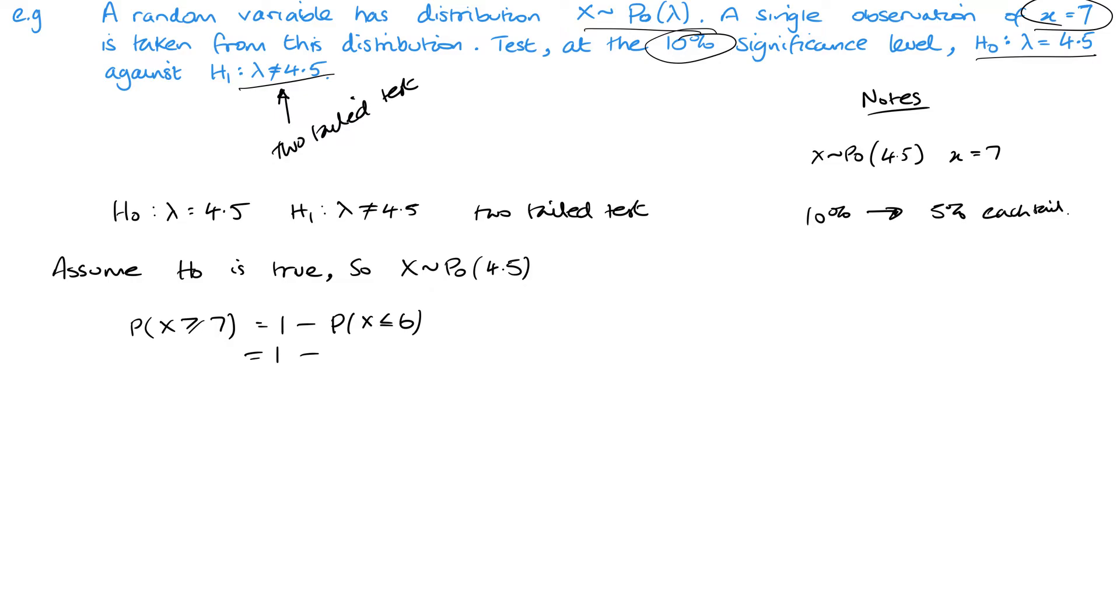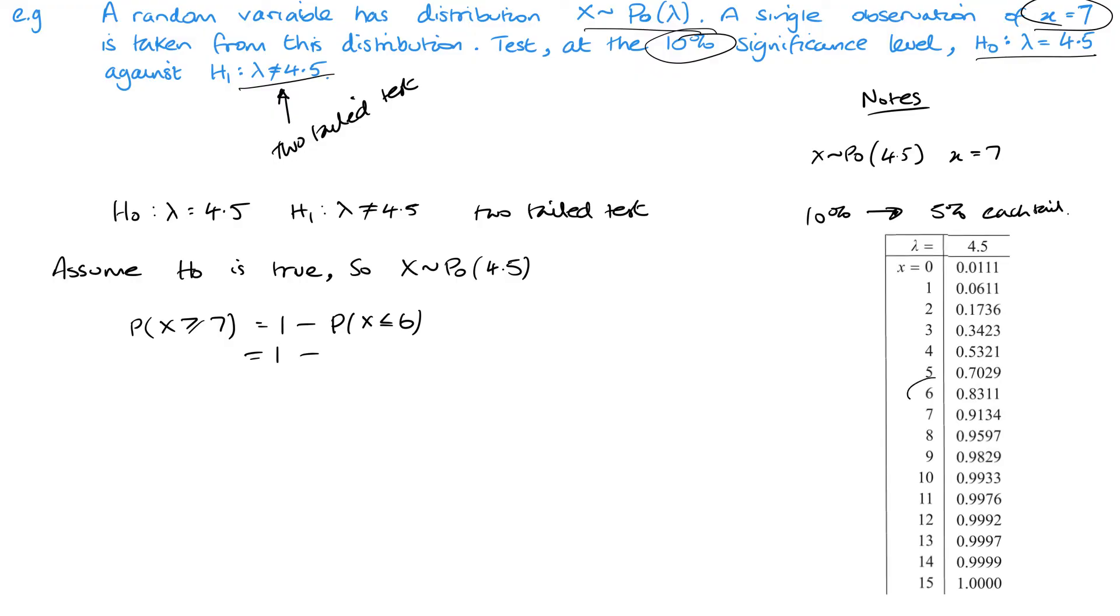And then you can go into your calculator, or I'll just pop up there the results from the table so that you can see them. So as you can see here, we look up the value for six, so 0.8311, and then that calculation, it's 0.168. Now quite clearly this is bigger than our 5%, which is 0.05.